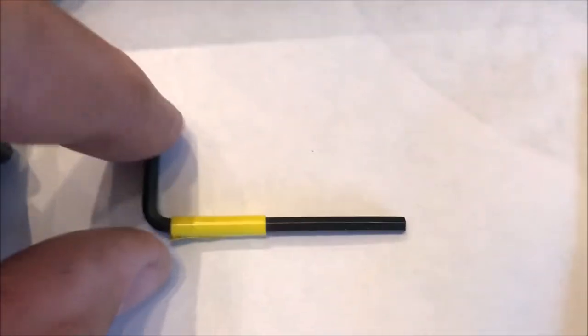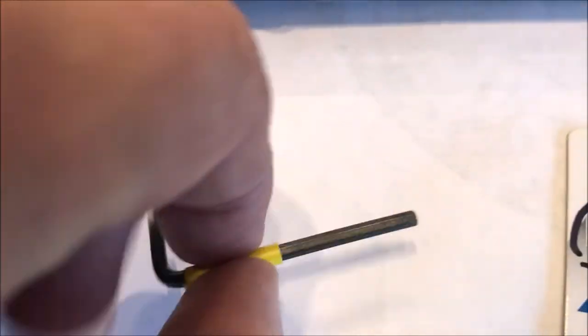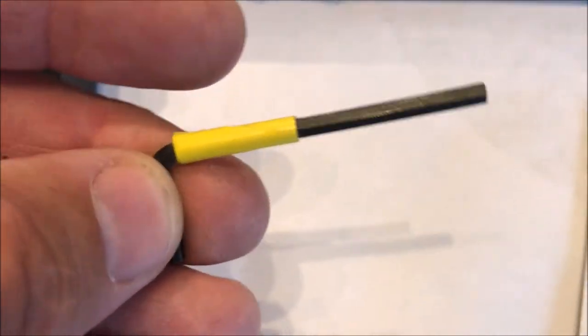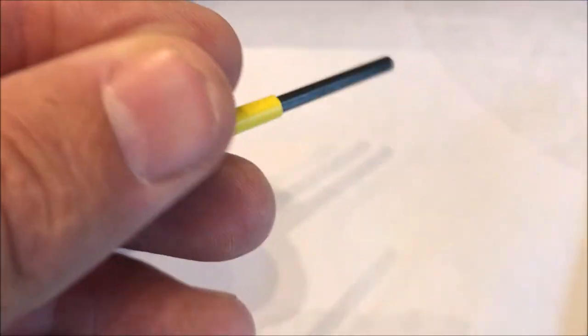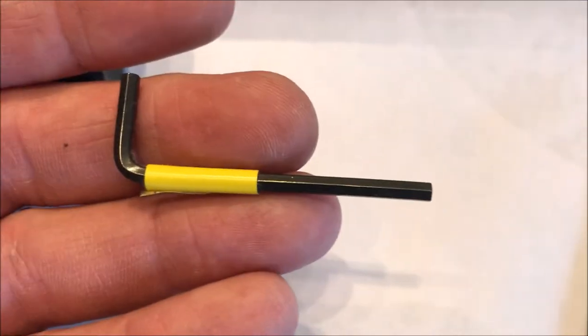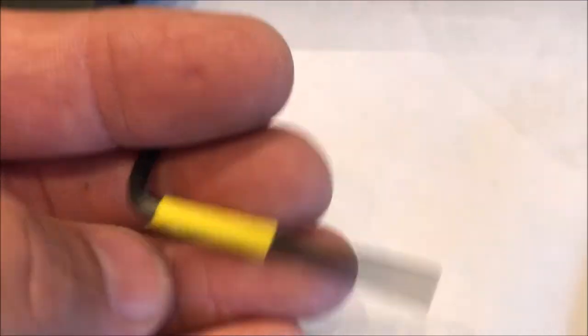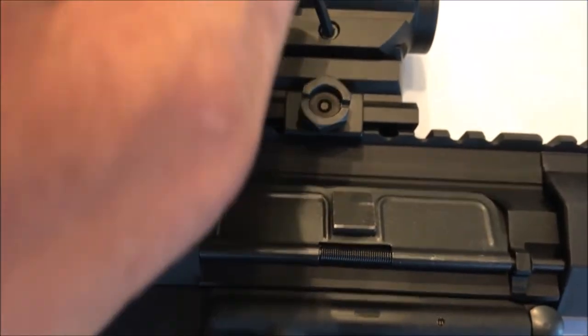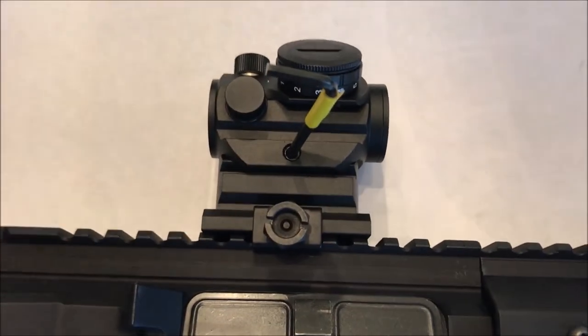One technique I've used over the years is to just take this yellow vinyl tape and when I have something that's specific to an application or something I use a lot I'll tape up the tool. So when I went and looked in my little container of Allen wrenches this one popped out because it has the tape on it. And it is the right size for removing that Bushnell red dot.